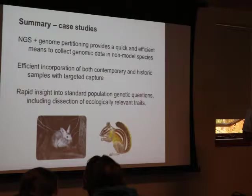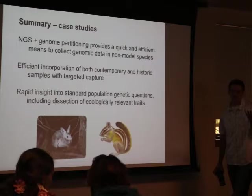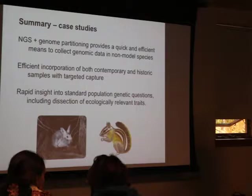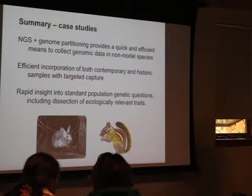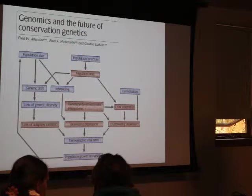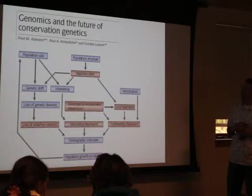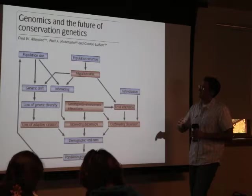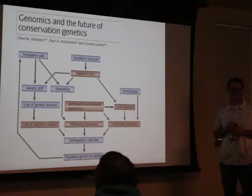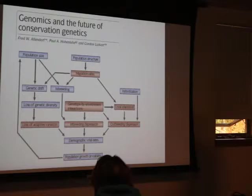In summary, this provides a quick and efficient method to collect genomic data in non-model species. It allows use of both contemporary and historic samples — probably one of capture's main advantages. It can afford rapid insights into population genetic questions. The allure of capture, versus RAD or RNA-seq, is that you're testing hypotheses that are more specific than anonymous loci: you can go in with a priori hypotheses, put candidate genes or all genes on the array, and you have control of the experiment. When you get an association, you're already on track to interpret it and design follow-up experiments.